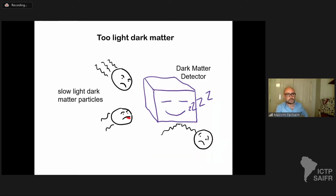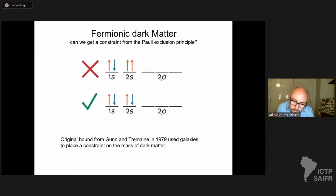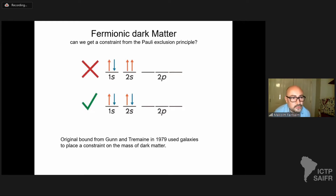Another reason we might not have detected dark matter at a detector is that it might be too light. Regardless of its mass, dark matter travels at the same speed inside the galaxy — around 200 km/s — so a low-mass dark matter particle hitting our detector might not dump enough kinetic energy to make the detector register. If dark matter is a very light fermion, we can put a constraint on it in a different way.